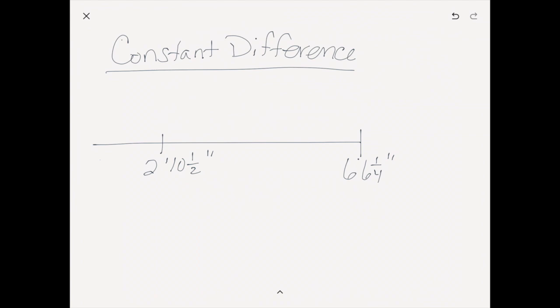Our last strategy: I saved constant difference for last because it actually does not make sense on this problem, and your students most likely will not use this strategy because of the context. You might have kids who love this strategy and use it devoid of context — they get that it doesn't really make sense here but still use it. Constant difference is the idea of seeing it as the difference. The idea is we really need to find the difference between these two amounts on our board — that's what tells us what's left over.